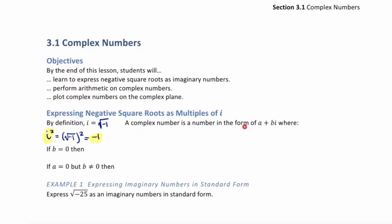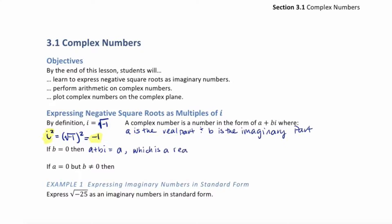A complex number is a number of the form a plus bi, where a is the real part and b is the imaginary part. If b equals 0, then a plus bi equals just a, which is a real number. If a is equal to 0, then we have a plus bi equals bi, which is an imaginary number.